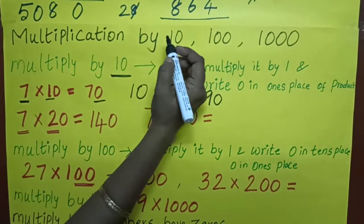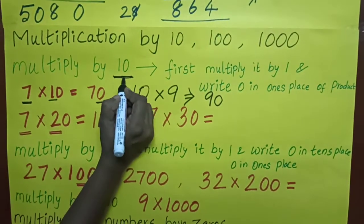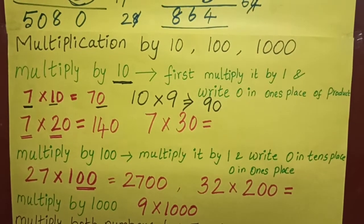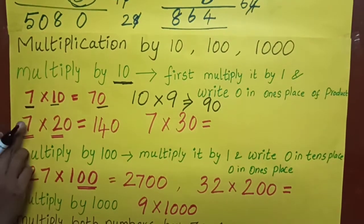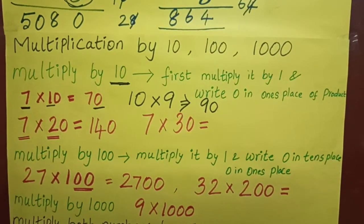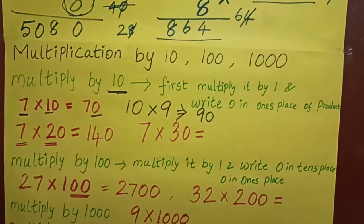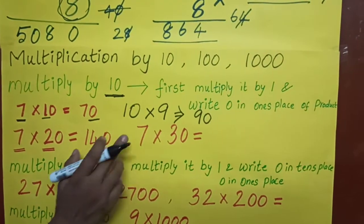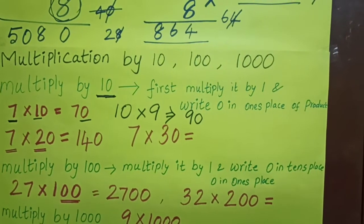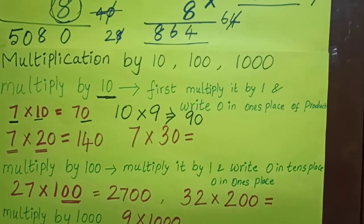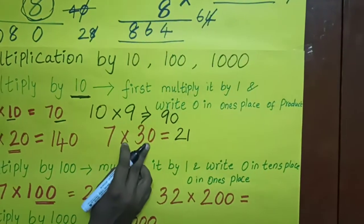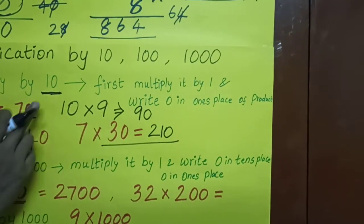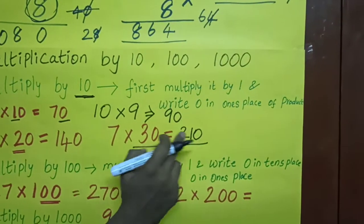Pay attention — if the number is having a 0 in the one's place, calculate how many zeros first. Then multiply with the number, then add the zeros. For example, 7 into 30: 7 threes are 21. Then add the one zero. How many zeros in the number? 1 zero, so write 1 zero after the product.